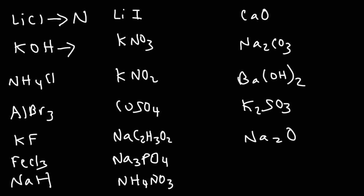What about potassium hydroxide? Whenever you see hydroxide, it's a strong base, so that's a basic salt. For ammonium chloride: ammonium is an acidic ion, so ammonium chloride is acidic overall. For aluminum bromide: Al3+ is an acidic metal cation, and bromide is neutral, so that salt is acidic. Potassium fluoride: potassium is neutral, and fluoride is the conjugate base of a weak acid, so fluoride is a basic ion — overall, this is basic.